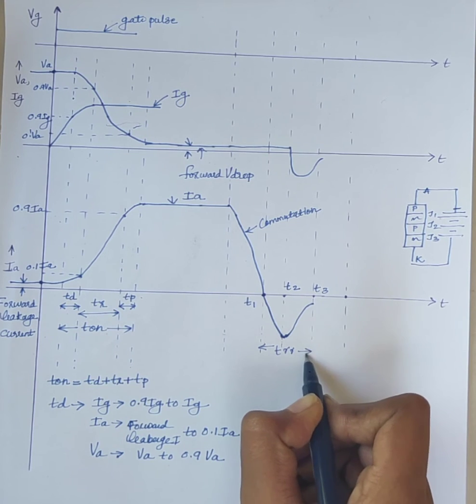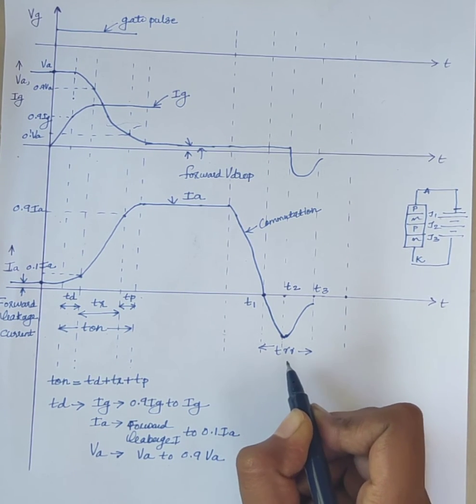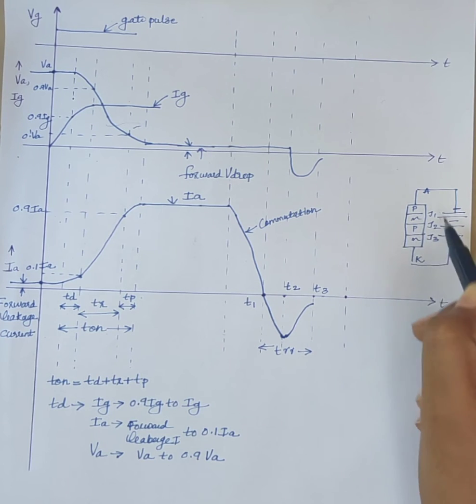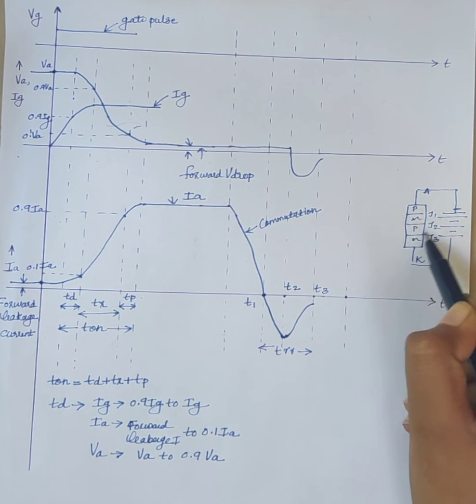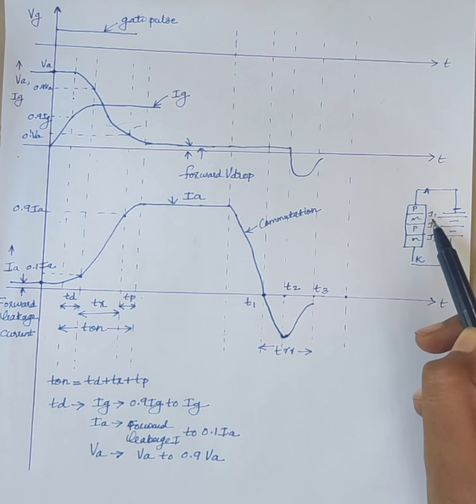TRR represented as TRR, reverse recovery time. After removing all the charge carriers from junction J1 and J3 during reverse recovery time, there is still charge carriers present in the inner N and P layers, that is at junction J2. This trapped charge carriers can be removed by recombination only. And the interval in which this recombination is done is called gate recovery time.